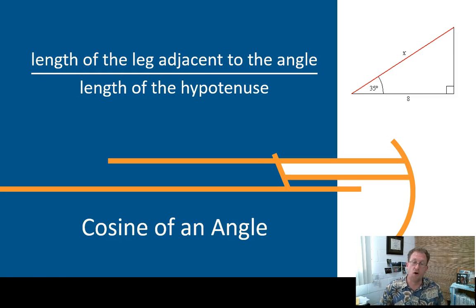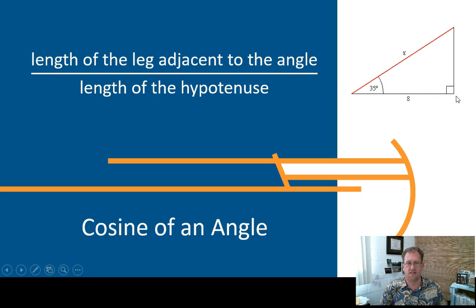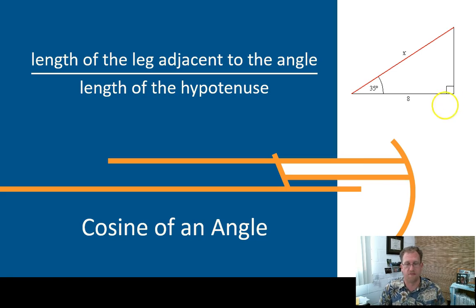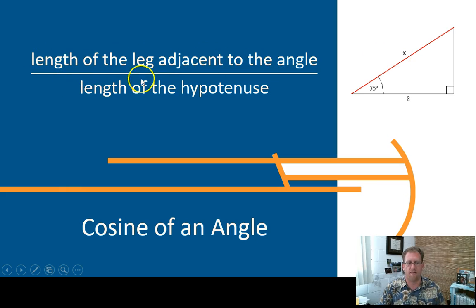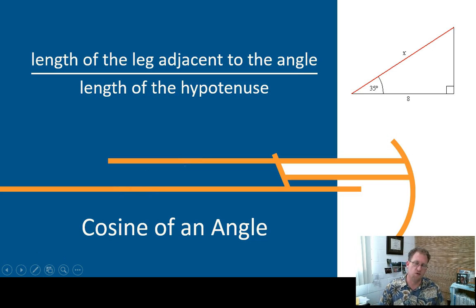Cosine is just like sine. If I have this angle and I know that this is 35 degrees, I can tell you the relationship between the length of the hypotenuse and the length of the adjacent leg. I don't know anything else about the triangle — if I have this angle measure, I can tell you the ratio between the two. If you give me the absolute measurement, like this leg is 8, then I can tell you the absolute measure of the hypotenuse. The length of the leg adjacent to the angle divided by the length of the hypotenuse — the ratio here is adjacent over hypotenuse. Cosine is adjacent over hypotenuse — C-A-H.